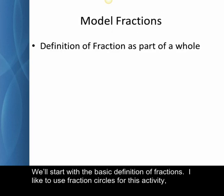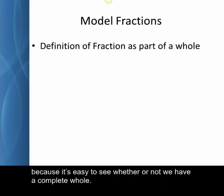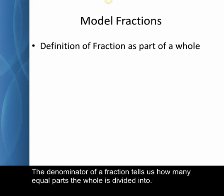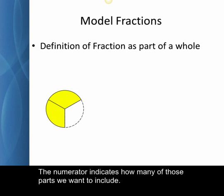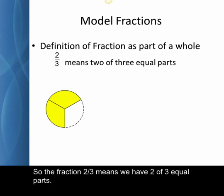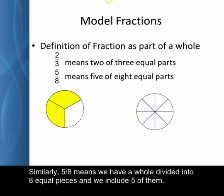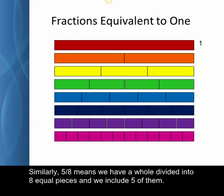We'll start with the basic definition of fractions. I like to use fraction circles for this activity because it's easy to see whether or not we have a complete whole. The denominator of a fraction tells us how many equal parts the whole is divided into. The numerator indicates how many of those parts we want to include. So the fraction two-thirds means we have two of three equal parts. Similarly, five-eighths means we have a whole divided into eight equal pieces and we include five of them.